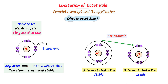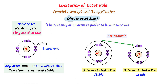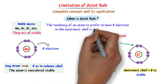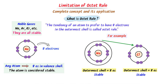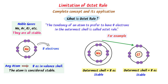Therefore, we define the octet rule as the tendency of an atom to prefer to have eight electrons in the outermost shell. Just remember that any atom is stable if it has eight electrons in its outermost shell.